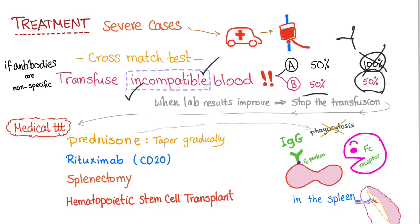Prednisone is used because it is anti-inflammatory — the process of macrophages destroying IgG-coated red blood cells involves inflammation, so prednisone can help. Rituximab is a monoclonal antibody against CD20. Splenectomy will help because the hemolysis occurs in the spleen. As a last resort, hematopoietic stem cell transplant.